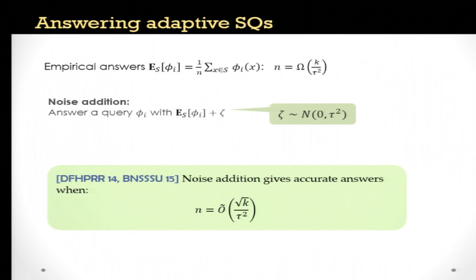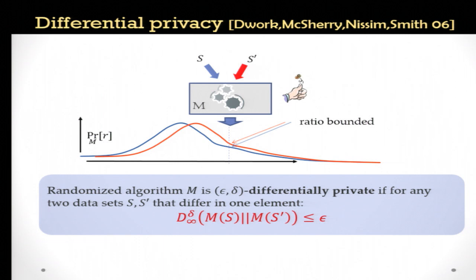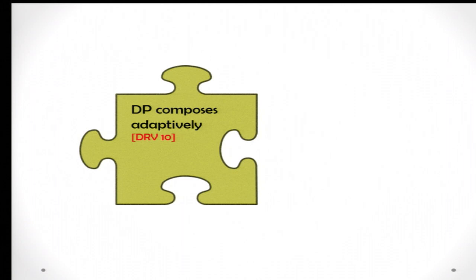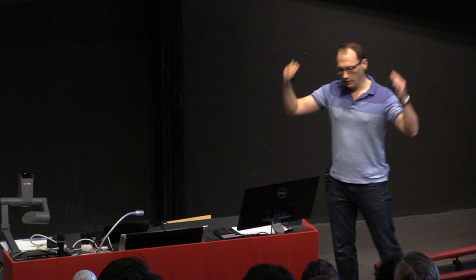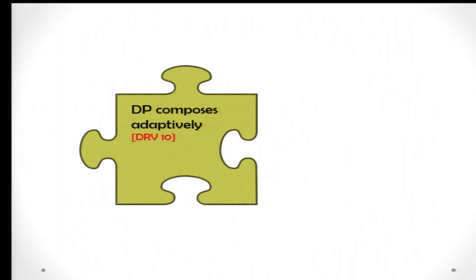This is a relatively surprising result. To establish it, they used tools from differential privacy — specifically the approximate notion where the ratio is allowed to exceed e to the epsilon on some delta fraction of the domain. Differential privacy is relevant here because of two nice properties: first, it composes adaptively — even if several differentially private algorithms depend on each other, the resulting algorithm still satisfies differential privacy scaling with the number of algorithms used.